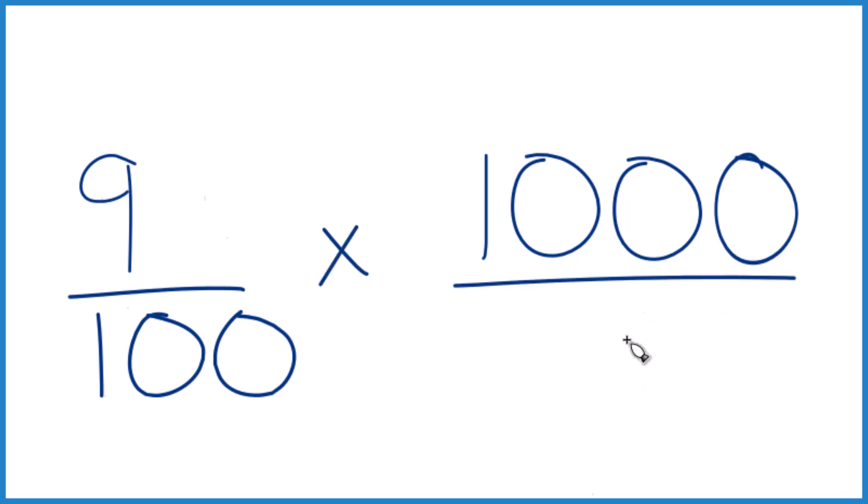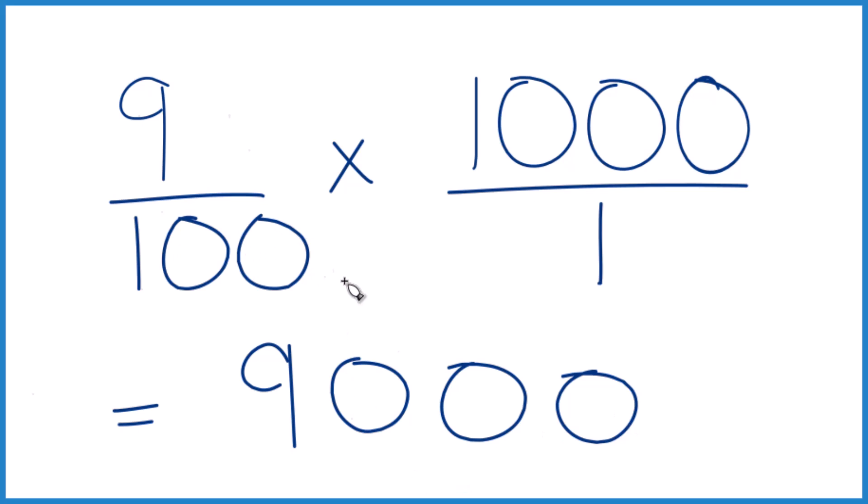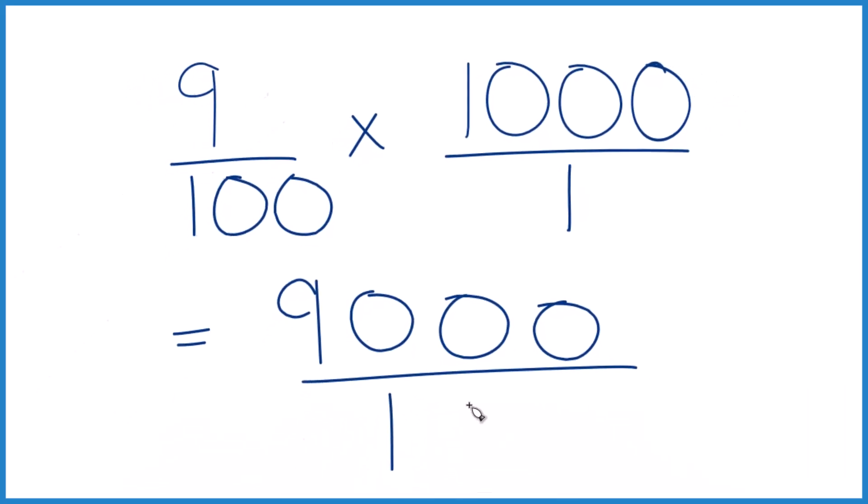And let's multiply it by 1,000 over 1. It's still 1,000, but everything lines up. 9 times 1,000, that gives us 9,000. And 100 times 1, that is 100.